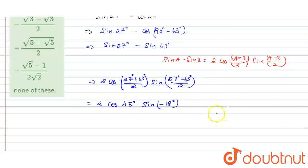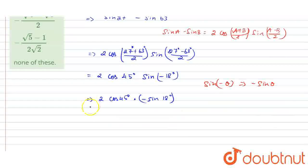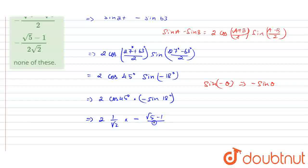Okay students, there is one formula: sin(minus theta) I am going to turn as minus sin theta. So I am going to substitute like this: 2 cos 45 degree into minus sin 18 degree. Now I am going to substitute the values: 2 into cos 45 degree equals 1 by root 2, into minus, and sin 18 degree equals root 5 minus 1 divided by 4.